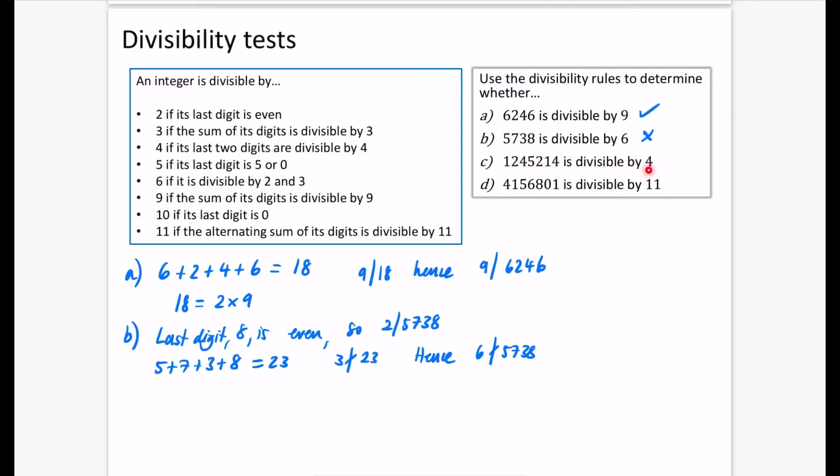Now we're going to decide if this number is divisible by 4. So the last two digits are 14. It's not a 1 and a 4, it's actually a 14. And we're going to say that 4 does not divide 14. So 4 is not a factor of 14. Hence, we're going to say that 4 does not divide 1,245,214. And you can double check that in your calculator.